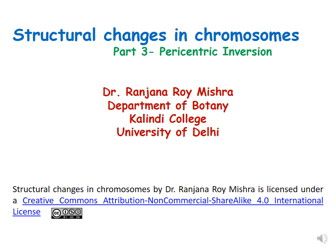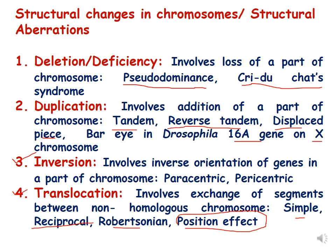Hello dear students. In this lecture we will be discussing pericentric inversion, and this is the third part of structural changes in chromosomes. In the first two lectures of this series, we have discussed deletion, deficiency, duplication, and paracentric inversion. Please refer to those lectures before this lecture, and we will be doing translocation in the next lecture.